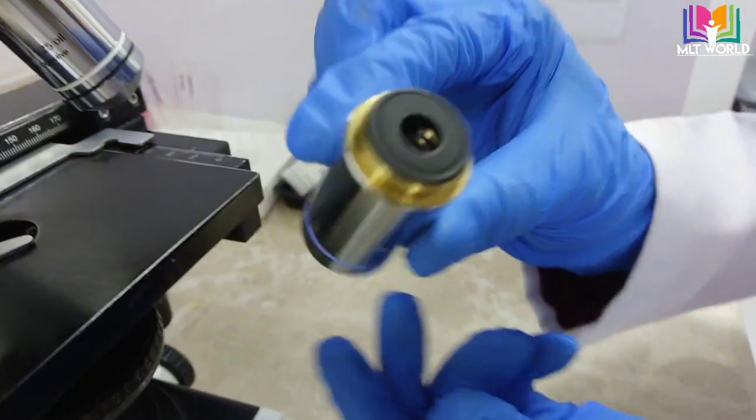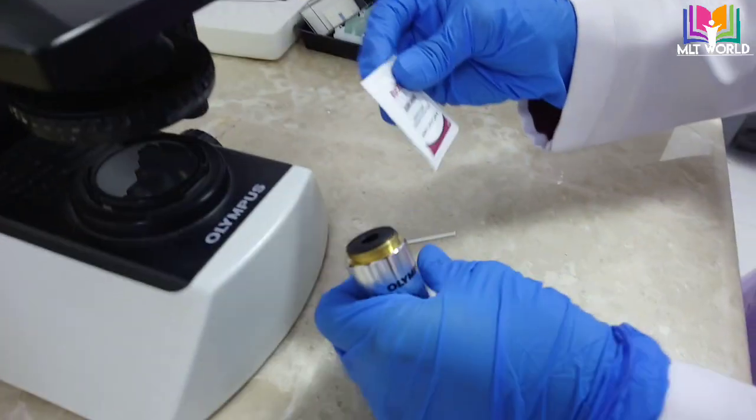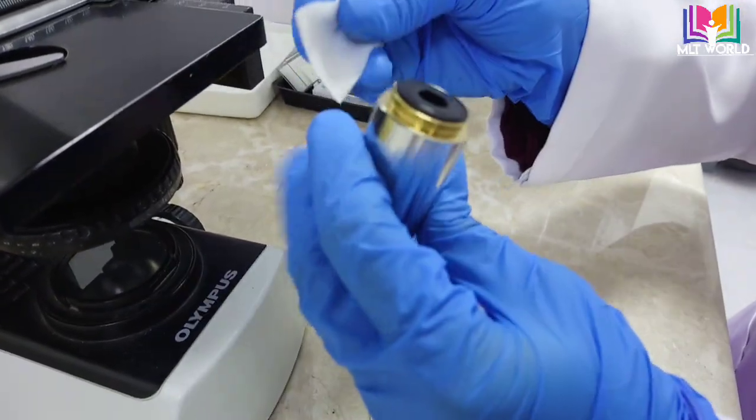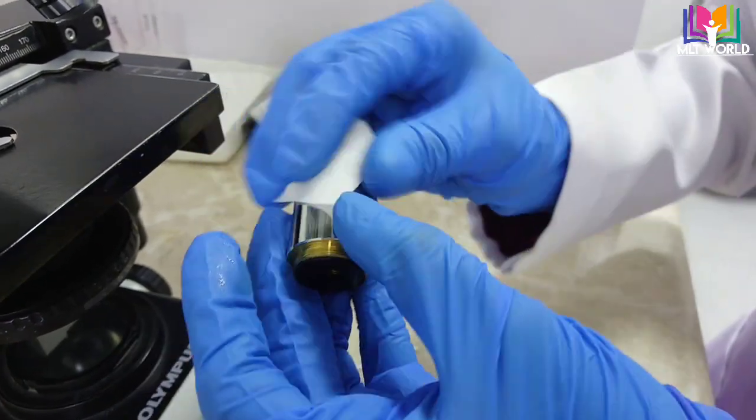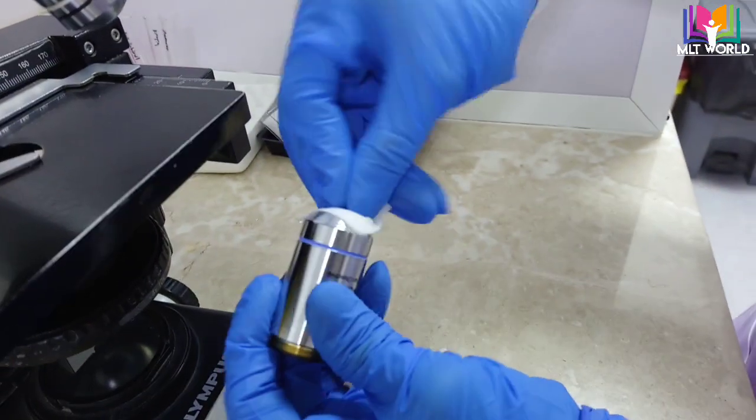Now we need one alcohol swab, and we will try to clean the lens from outside and inside. Like that, you will clean the sides. This area is more important; here we will clean.